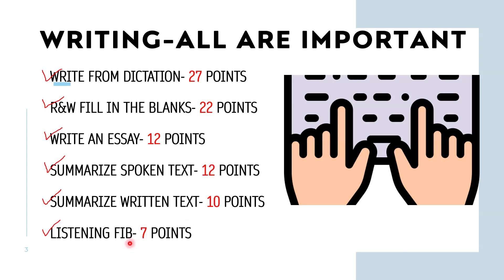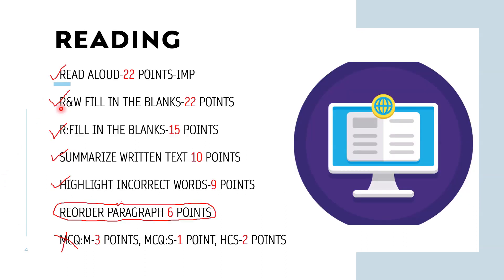Listening Fill in the Blanks is important. If your desired score is only 50 or 60 plus, you can skip 2 to 3 points, but still focus on it. If your Reading and Writing Fill in the Blanks is not good, focus on Listening Fill in the Blanks. If your desired score is 70 plus or 90, focus on all these tasks: Write from Dictation, Reading and Writing Fill in the Blanks, Write an Essay, Summarize Spoken Text, Summarize Written Text, and Listening Fill in the Blanks. That's all about the writing section.